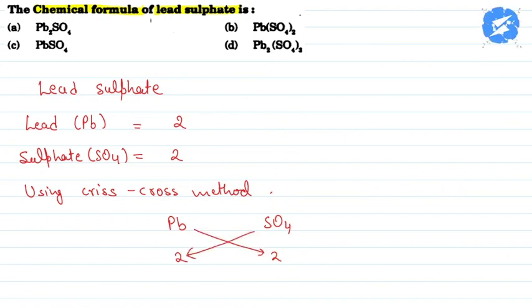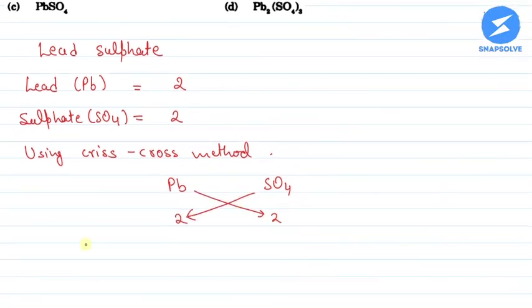So we have the formula that is PB2SO4 subscript 2. If we use the simplified method, we will write that PBSO4.